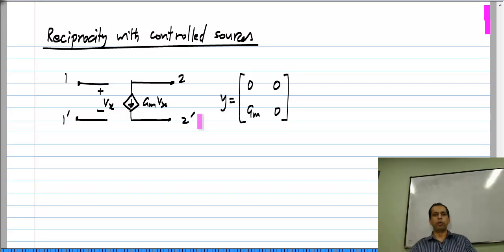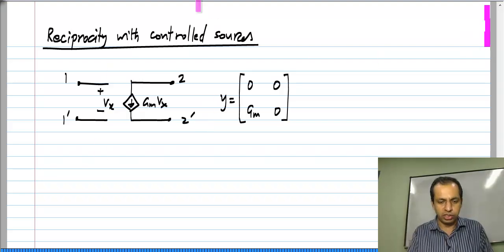But what I want to point out is that it is possible to realize reciprocal networks using controlled sources. So while purely resistive networks are necessarily reciprocal, it is not that when you have controlled sources, it will be non-reciprocal. You have to evaluate the two port parameters to find out. This particular two port is non-reciprocal, but let us say we take something else.